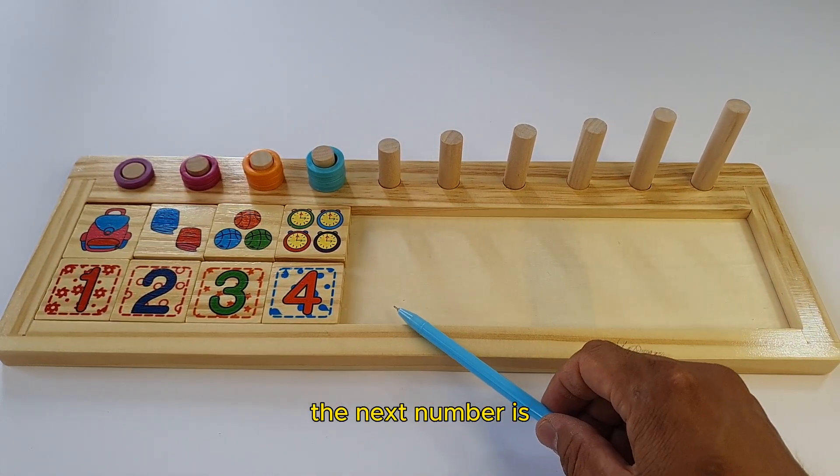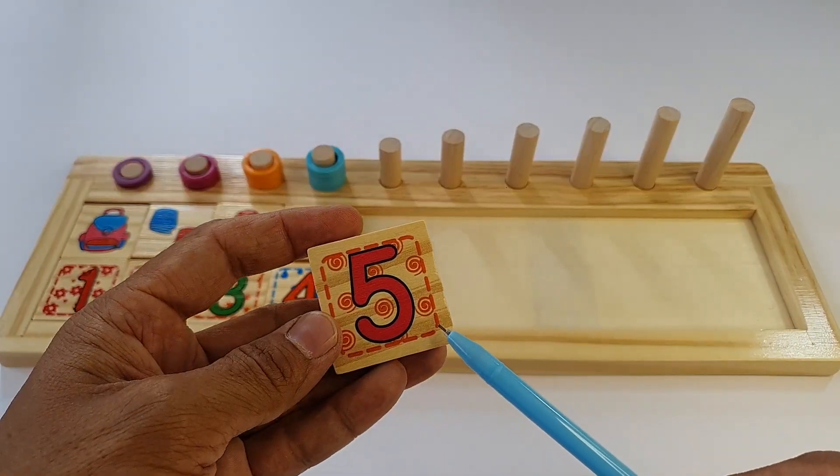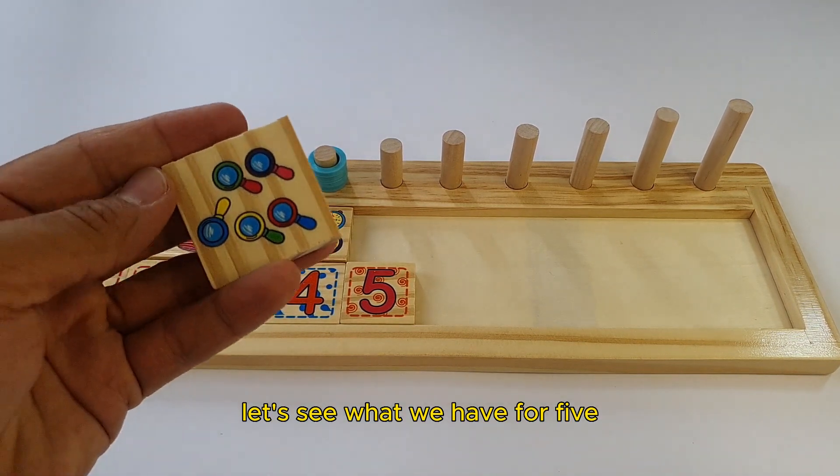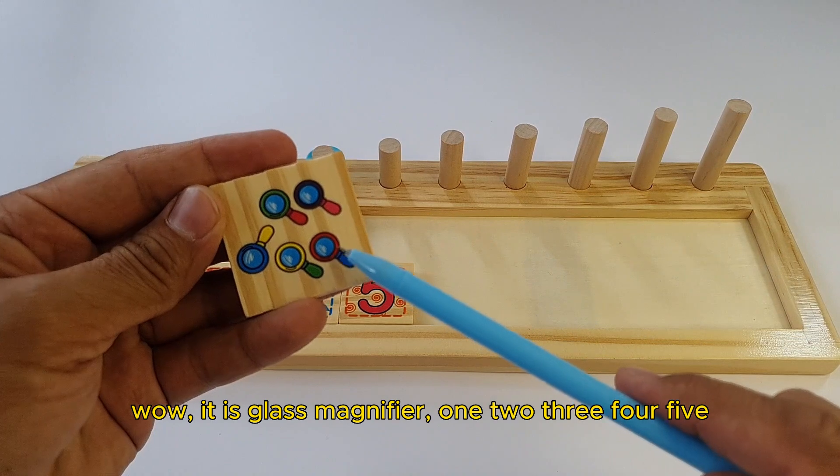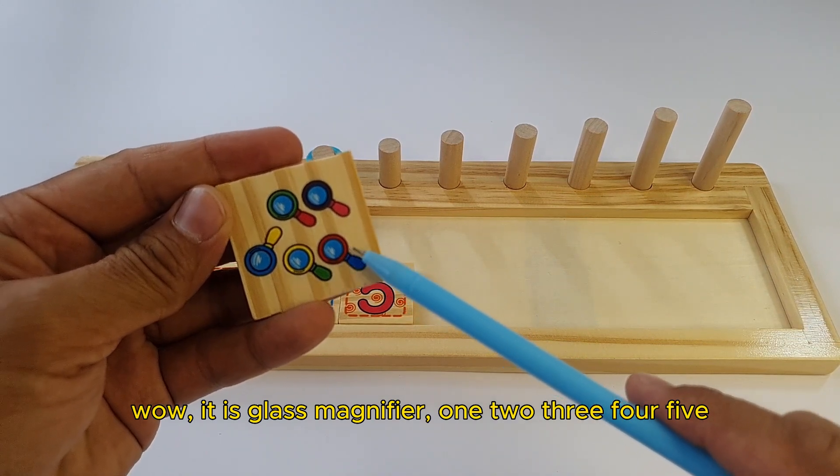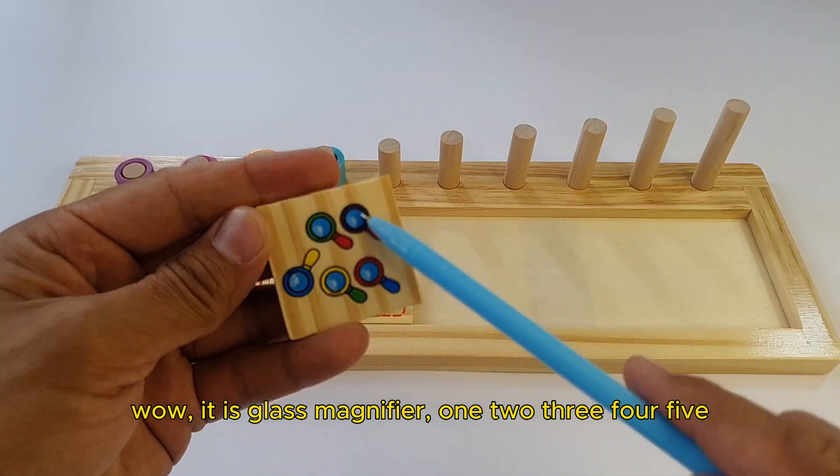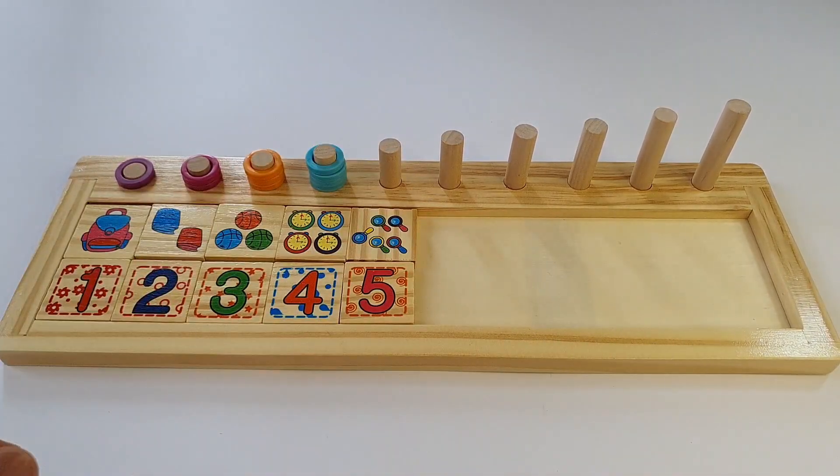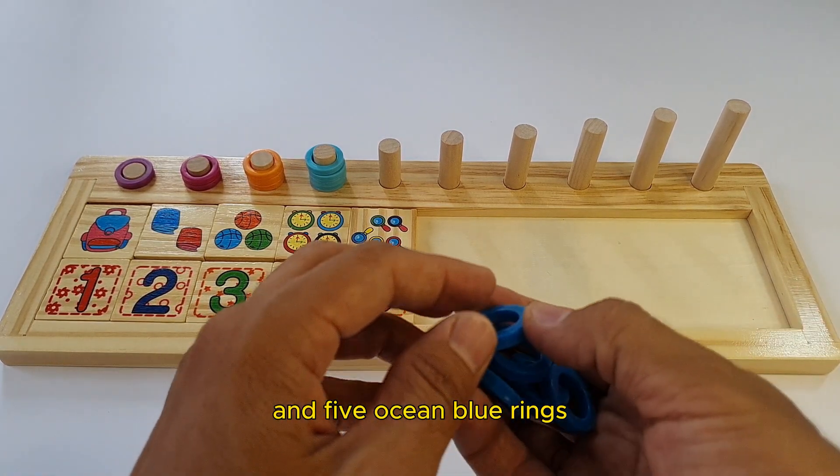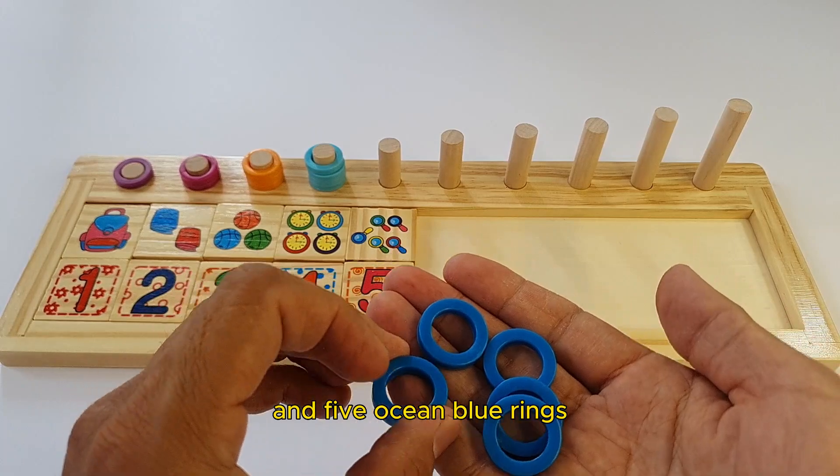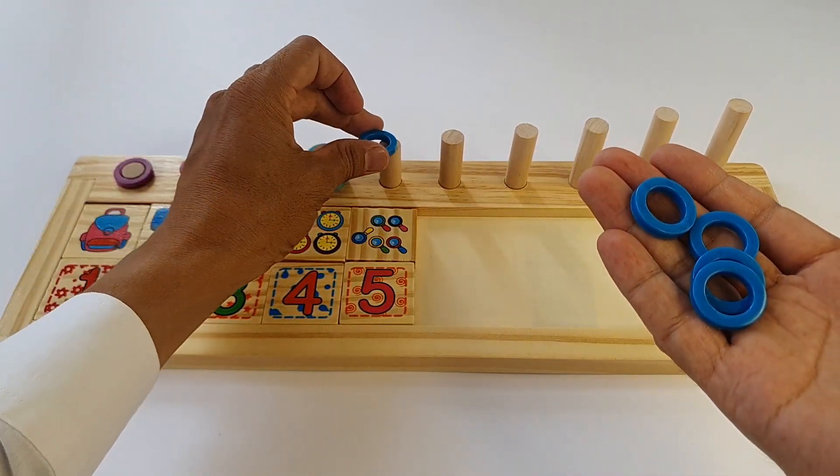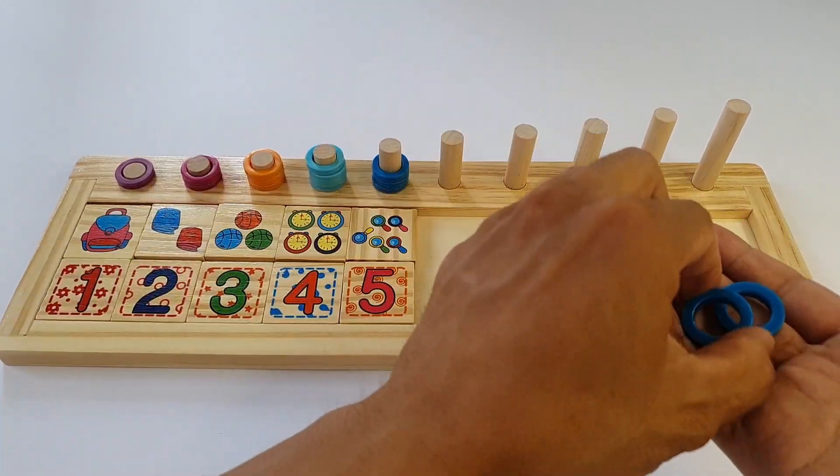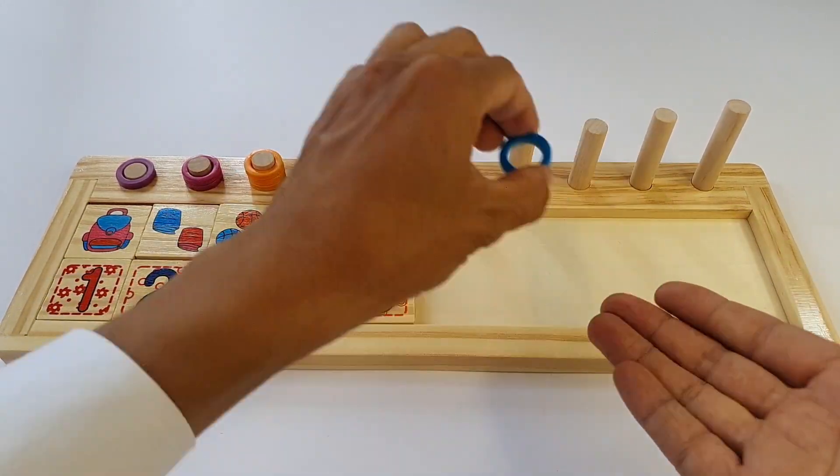The next number is five. Let's see what we have for five. Well, it is glass magnifier. One, two, three, four, five glass magnifiers. And five ocean blue rings. One, two, three, four, five.